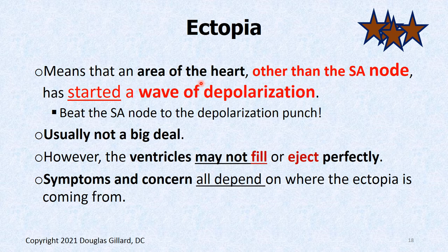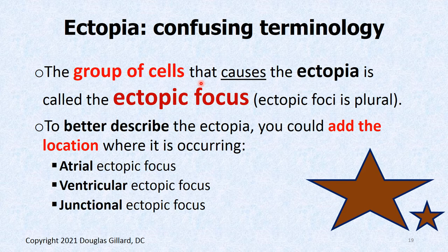Ectopia is usually not that big of a deal, but it can cause the ventricles not to fill or eject perfectly. In people with some heart conditions like atrial fib, AVNRT, or AVRT, it can cause serious problems. It can start AVRT as we will see later. Ectopia just means a group of cells other than the SA node that depolarize. A single cell is called an ectopic focus; a group of cells is called ectopic foci — ectopic foci is plural.